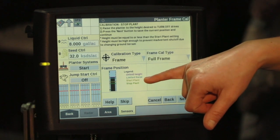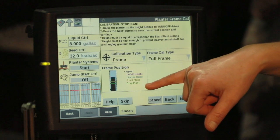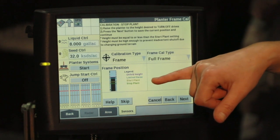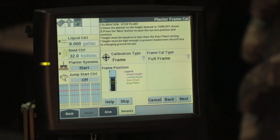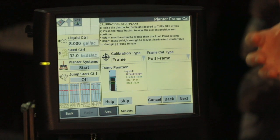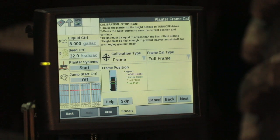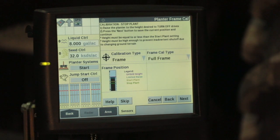One comment: make sure that you've got adequate space between the stop plant and the start plant height. We always want that start plant height to be higher than our stop plant height. So with that we are going to go through the full calibration process for you.